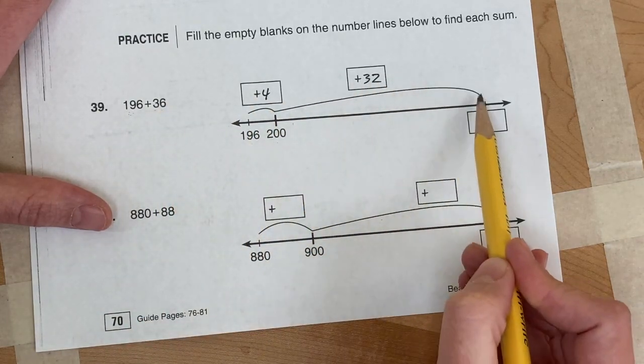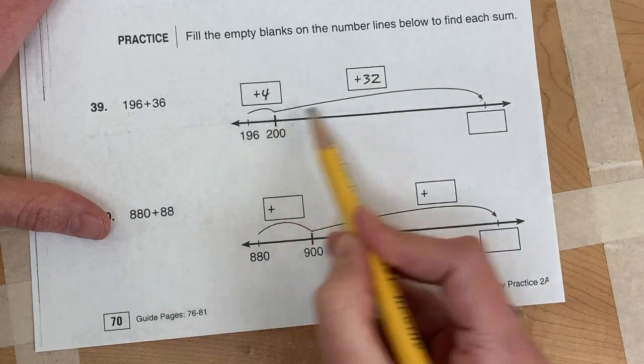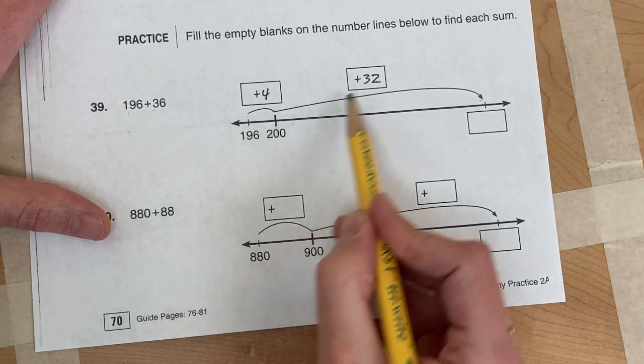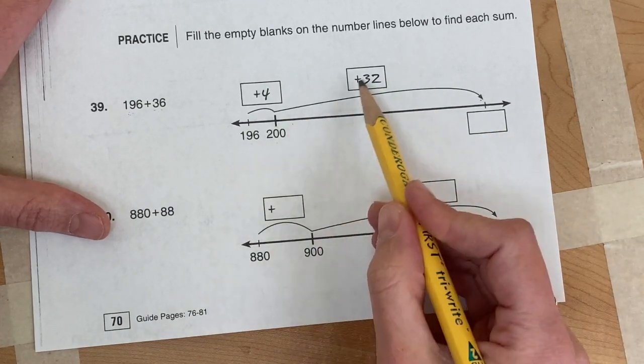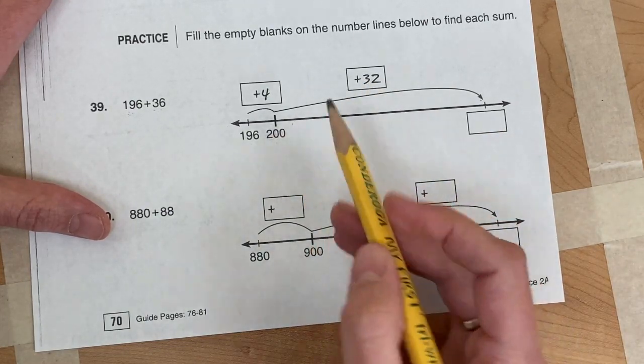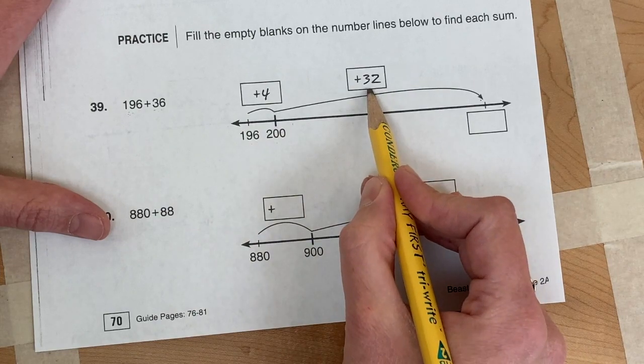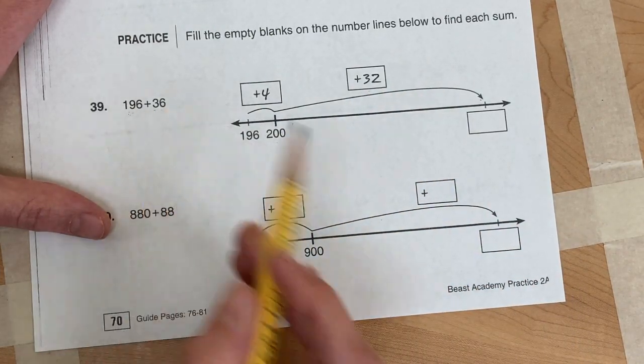Now that helps you know, what's 200 plus 32? And that's your answer right there. That ends up being a much easier question. 200 plus 32 is easier than 196 plus 36.